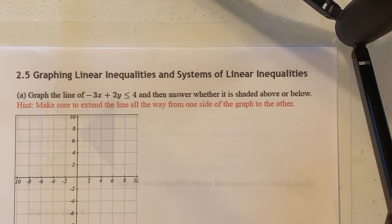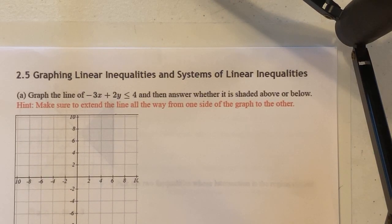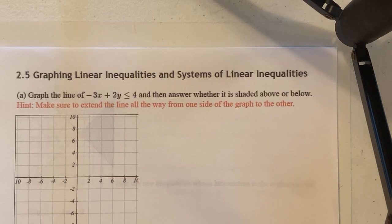Welcome back for another installment. This is 2.5, graphing linear inequalities and systems of linear inequalities. In our first example, it says graph the line of negative 3x plus 2y less than or equal to 4, and then answer whether it is shaded above or below.